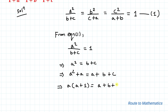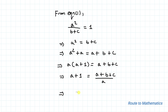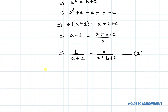This implies a+1 equals (a+b+c) divided by a. In the next step, by taking the reciprocal of both sides, we have 1 divided by (a+1) equals a divided by (a+b+c). Let's take this as equation 2.